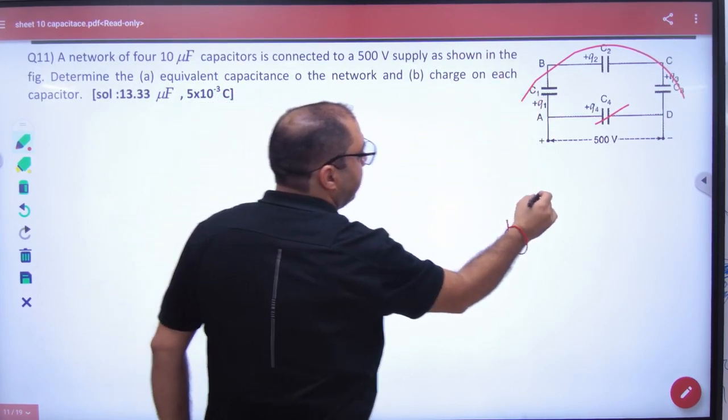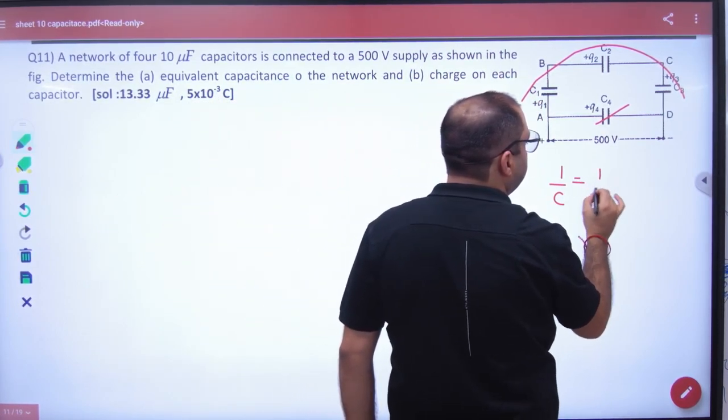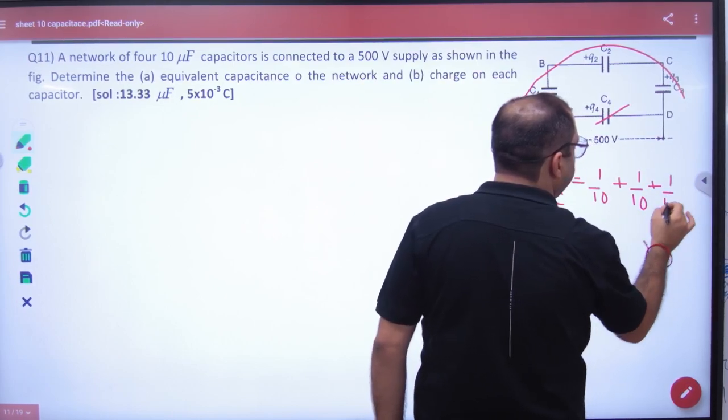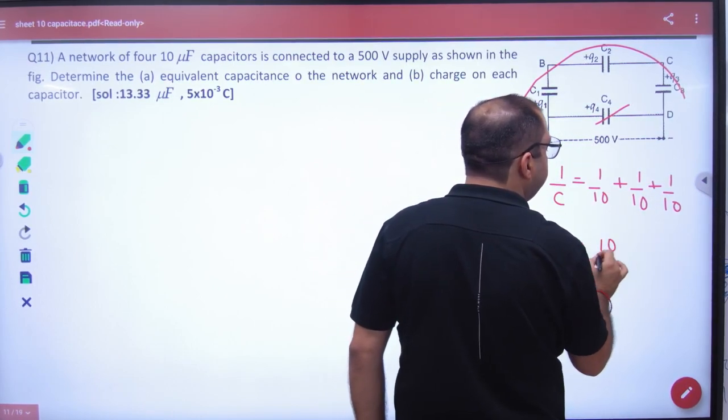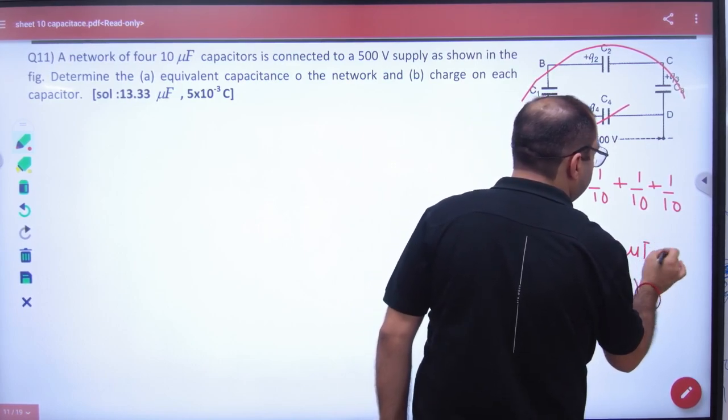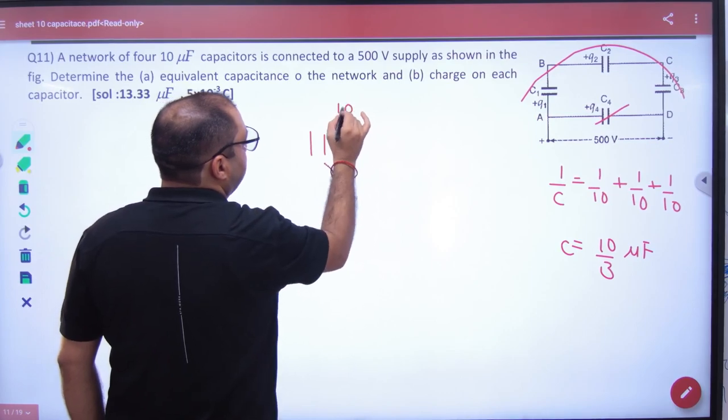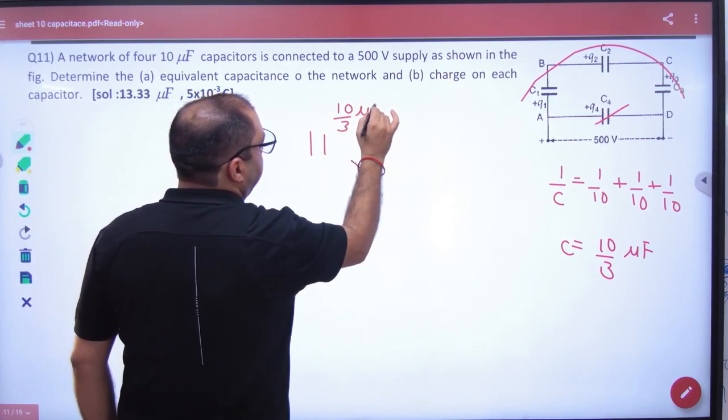So, we do work in 10-10-10 series. So, 1 by C is 1 by 10 plus 1 by 10 plus 1 by 10. So, C value is 10 by 3 microfarad. Simplify it. So, in these 3 places, I will place one capacitor 10 by 3 microfarad.